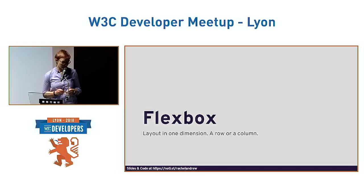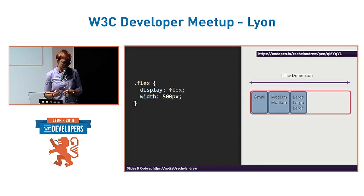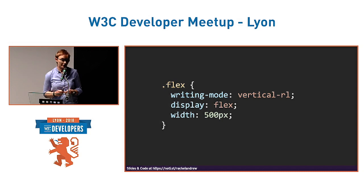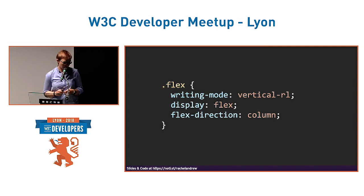According to the document writing mode, in a left-to-right, top-to-bottom language the items all start on the left and progress along to the right — and all we need is this little bit of code to make it so. But if the writing mode for the document or just for that component was a vertical writing mode, then the default direction of row would display the items one below the other.